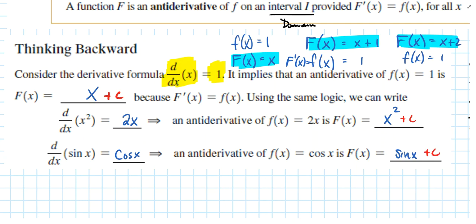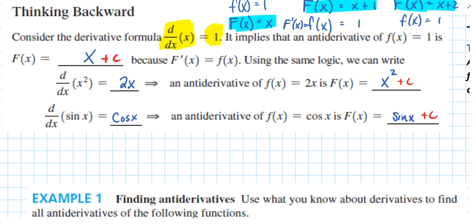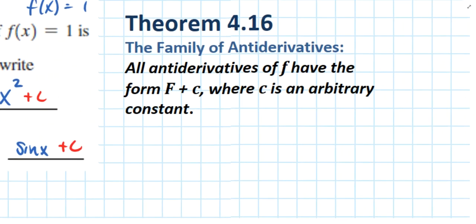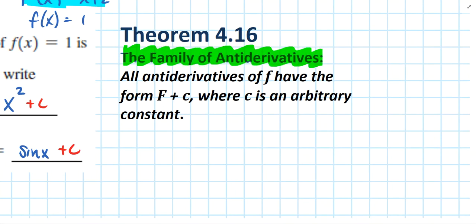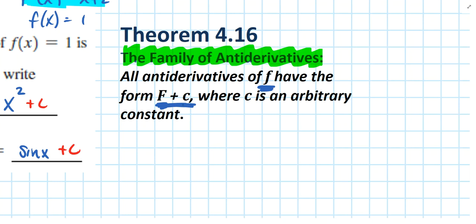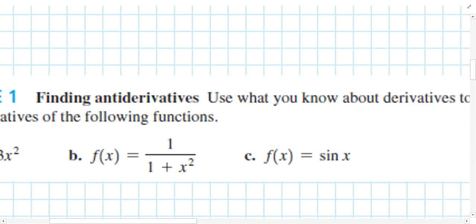It may seem trivial to add C to all these antiderivatives, and it will be easy to forget, but it is very important to include plus C. It helps us understand the differences between derivatives and antiderivatives. Later questions will provide enough information to identify the specific C value, but for right now we're not going to solve for C — we just include it with all our antiderivatives. This is called the family of antiderivatives: any constant value can be added or subtracted from the antiderivative, and still the derivative of that antiderivative equals the original function f.